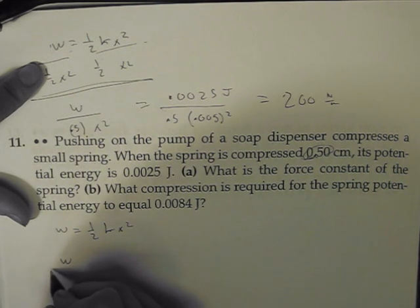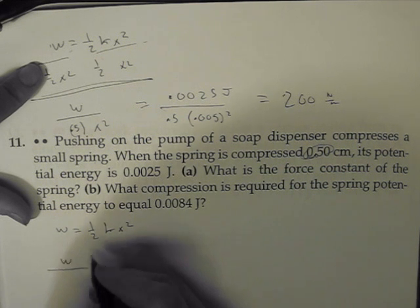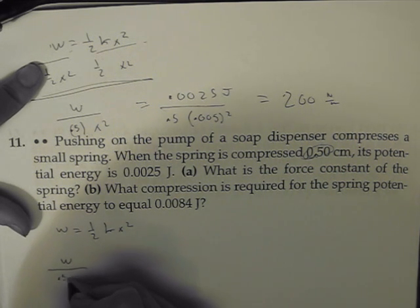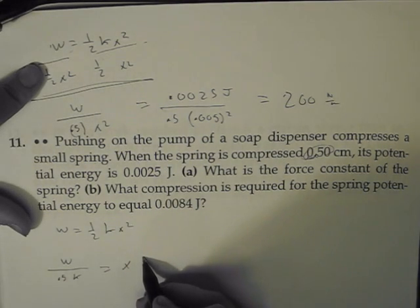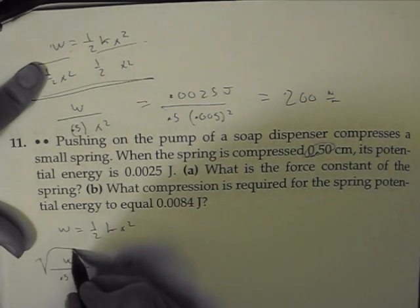So work—and if you divide this by 1 half k, so 0.5 k—this is going to equal x squared. But since we don't want it to be squared, we would just square root this part.